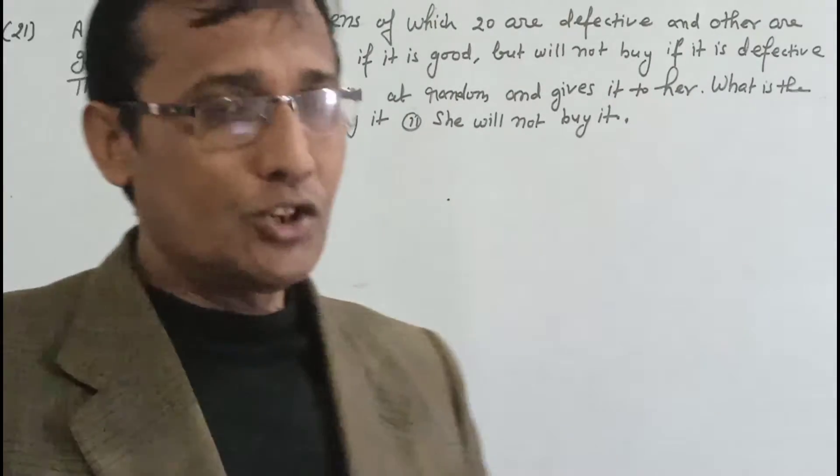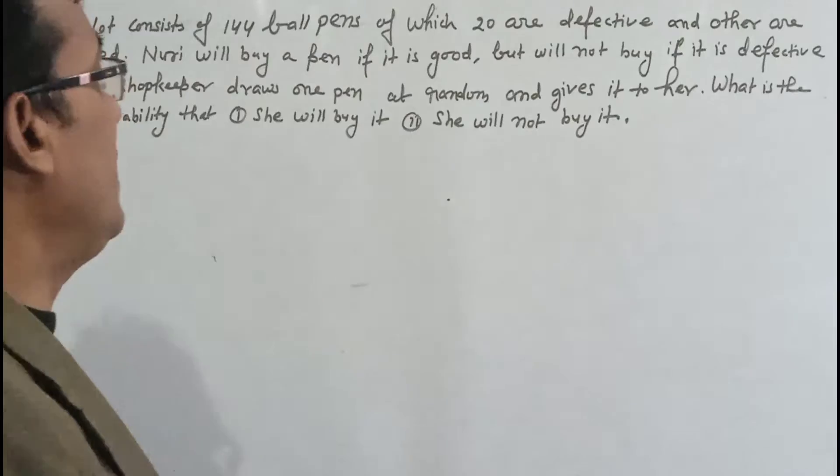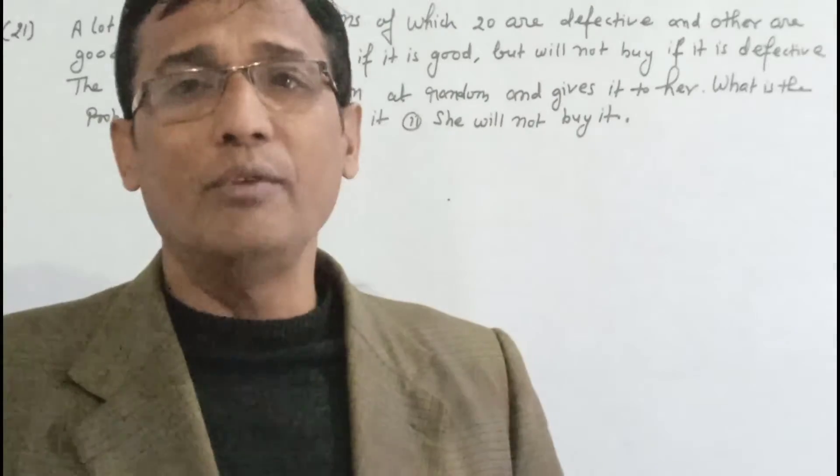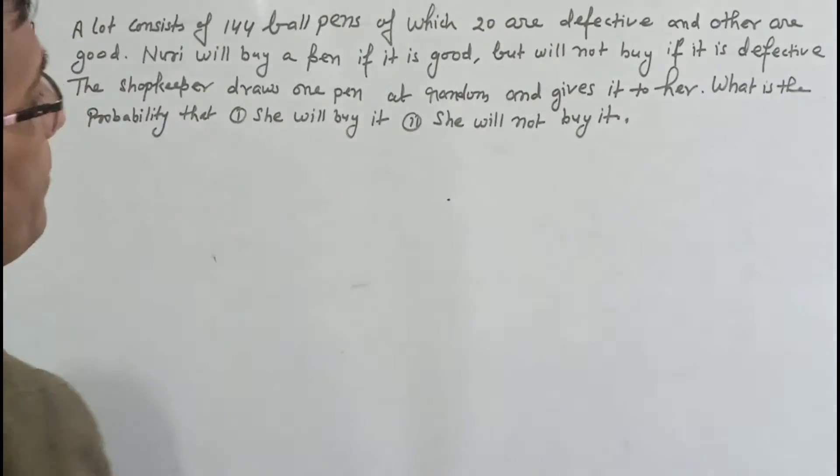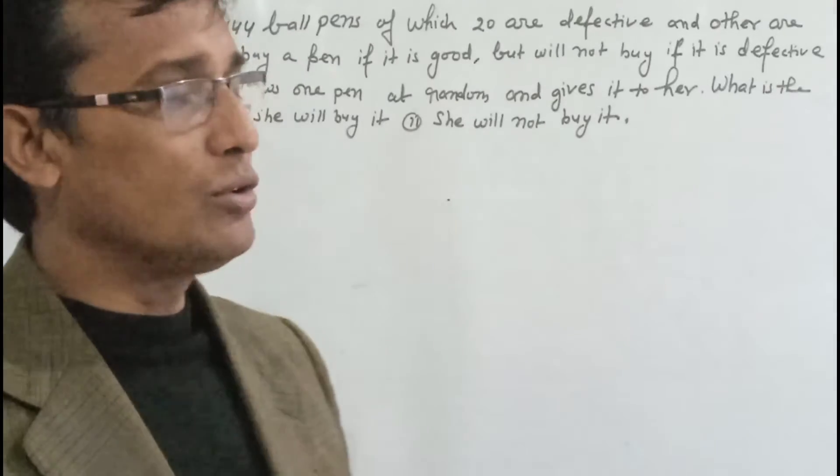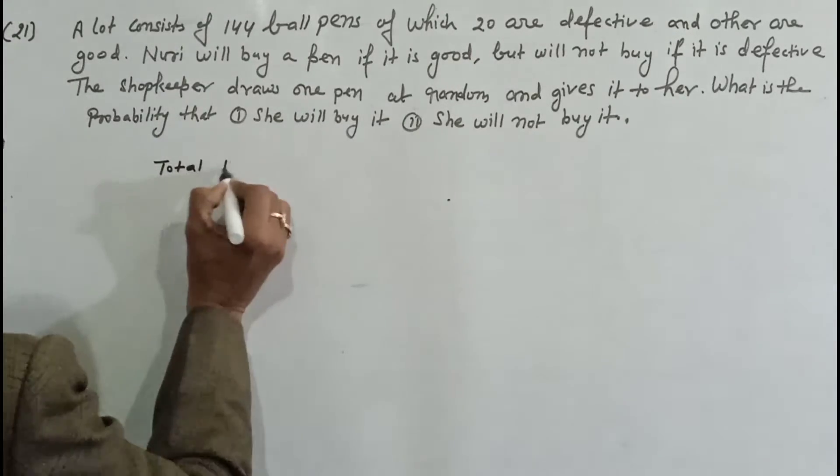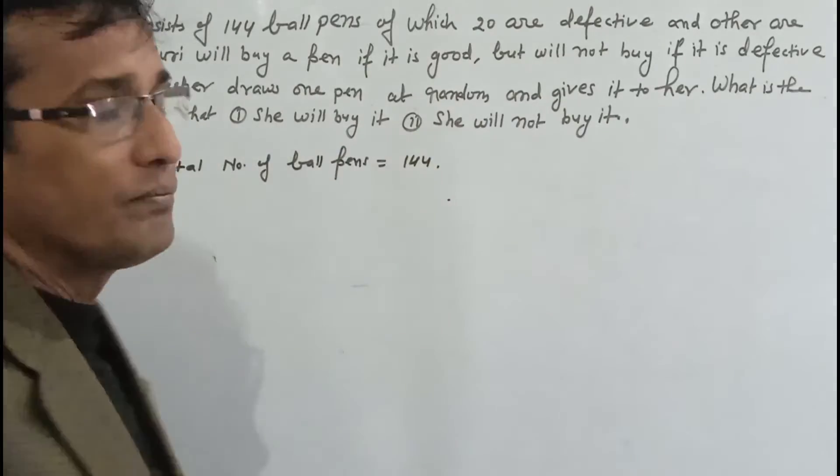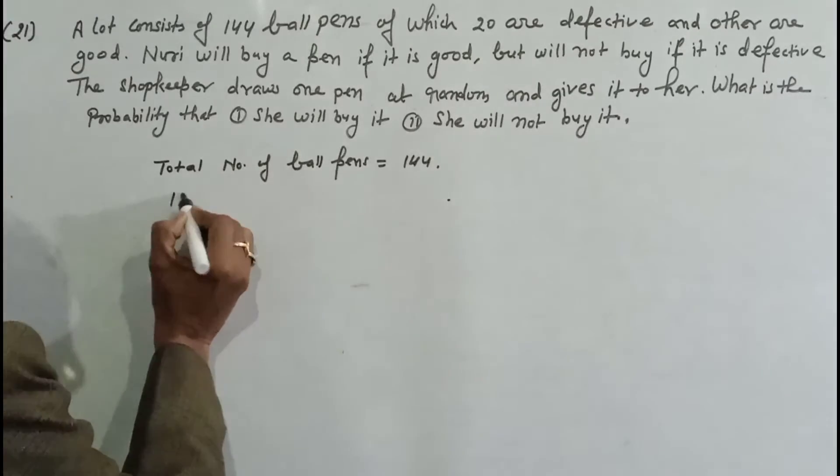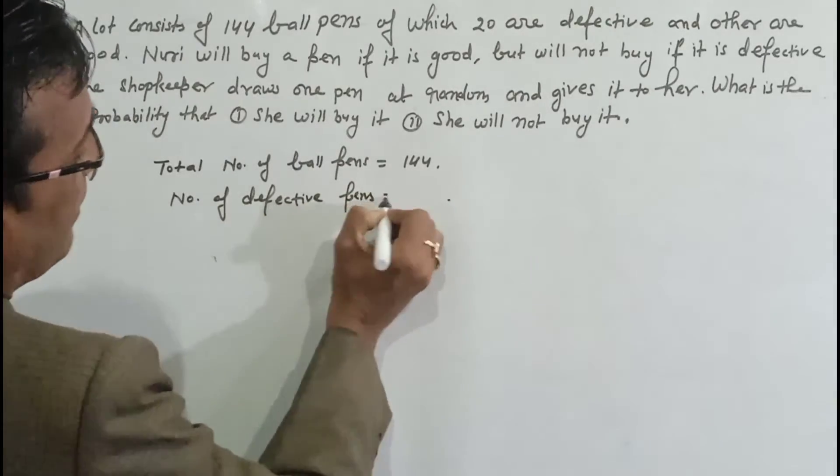Here is Noori. She goes to a shop and there are 144 ball pens in which 20 are defective. Number of ball pens equal to 144. And number of defective pens equal to 20.